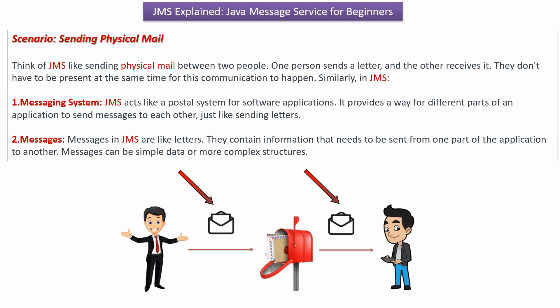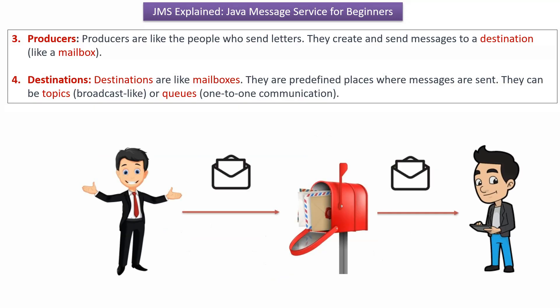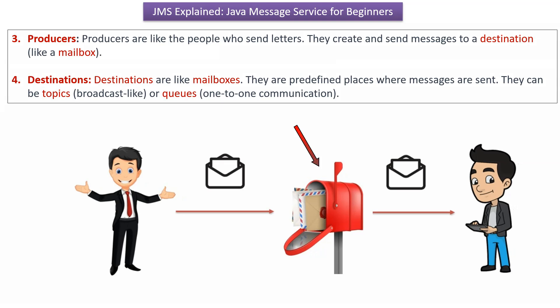Messages can be simple data or more complex structures. Producers are like the people who send letters — they create and send messages to a destination. Destinations are like mailboxes; they are predefined places where messages are sent, and they can be topics or queues.